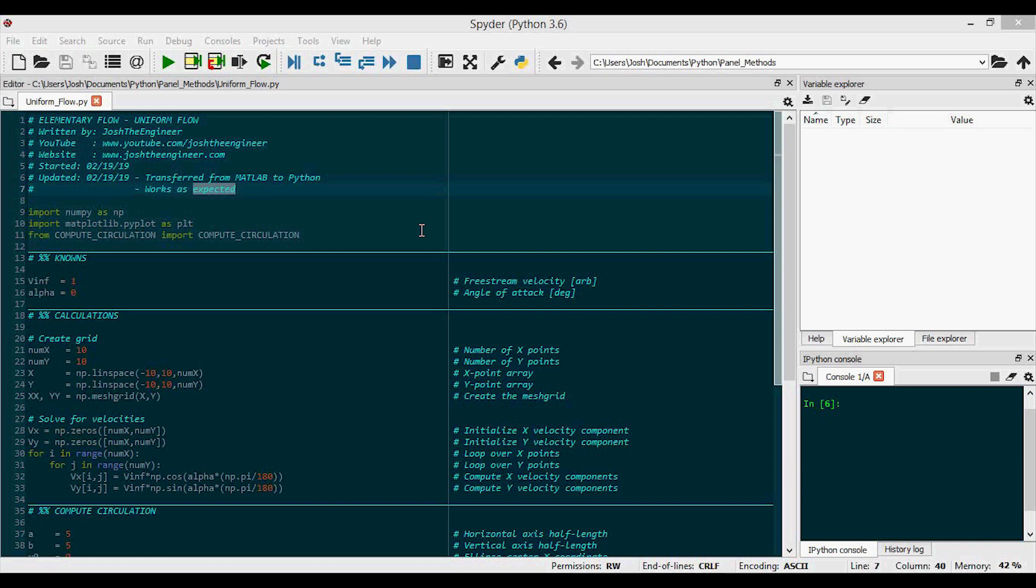Now let's look at some code for the uniform flow. We're looking at my python code here, but I also have this coded in matlab, and you'll be able to find both files on my website or github with links in the video description. And note that if you want to run this, you'll also need my compute circulation function in the same folder. So first we define the two knowns in this section here, which are the magnitude and direction of our freestream velocity vector v infinity and alpha, or the angle of attack.